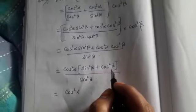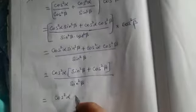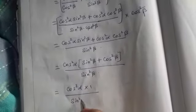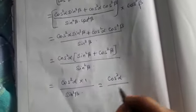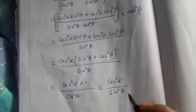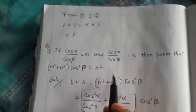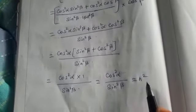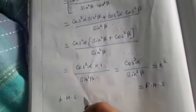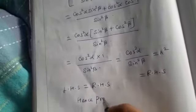Now, sin²β + cos²β = 1, which is the Pythagorean identity. Substituting 1, the expression becomes cos²α / sin²β, which is exactly n² (since n = cos α / sin β, so n² = cos²α / sin²β). Therefore LHS = RHS, hence proved.